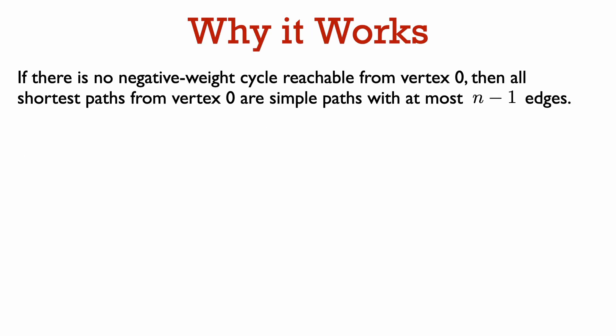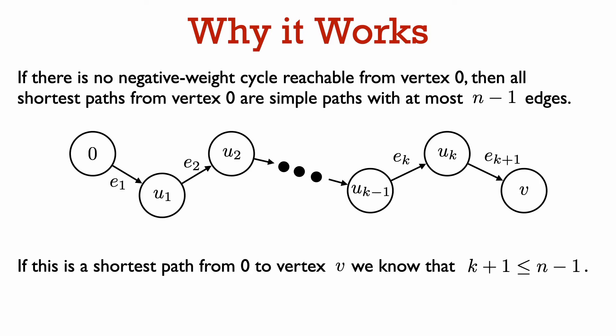Let's first see why the Bellman-Ford algorithm works. As we assume there is no negative weight cycle reachable from vertex zero, we know that all shortest paths from vertex zero will not have cycles. They will be simple paths, and the number of edges in the path will be at most n minus 1. So if this picture gives a shortest path from vertex zero to vertex v, then we know that the number of edges on this path, which is k plus 1, will be at most n minus 1.